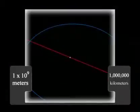Here we are 10 to the 9 meters, or 1,000,000 kilometers from the Earth, and the Earth is now quite a small ball. You can see the orbit of the Moon.